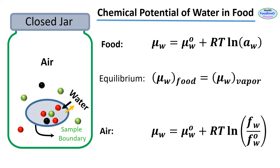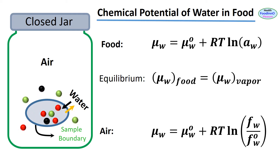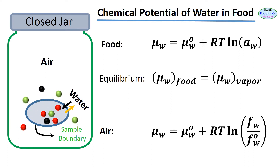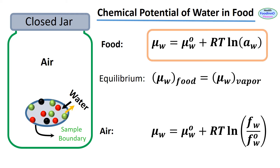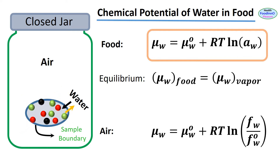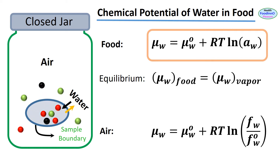Water molecules within the sample boundary can try to escape, or water from outside can also enter into the sample. This exchange depends on the chemical potential of water on both sides — chemical potential is the driving force in this process. The chemical potential of water inside a food can be written as μw = μw° + RT ln Aw, where μw is the chemical potential of the water inside the food, that is the thermodynamic activity or water energy of a food.